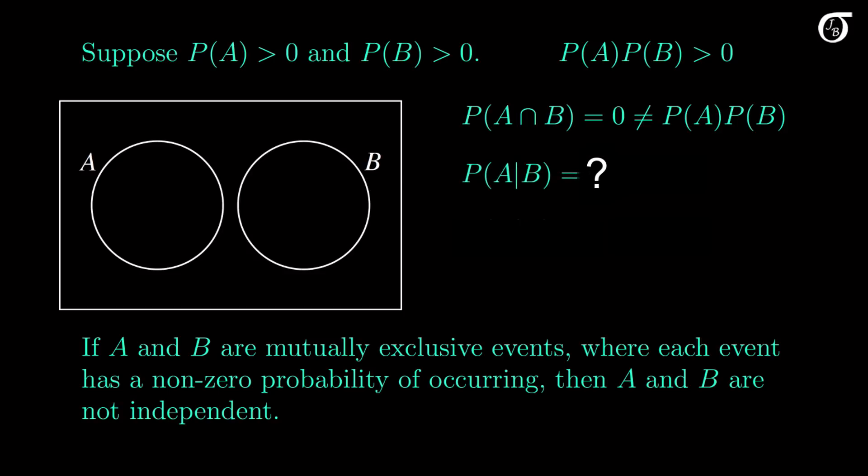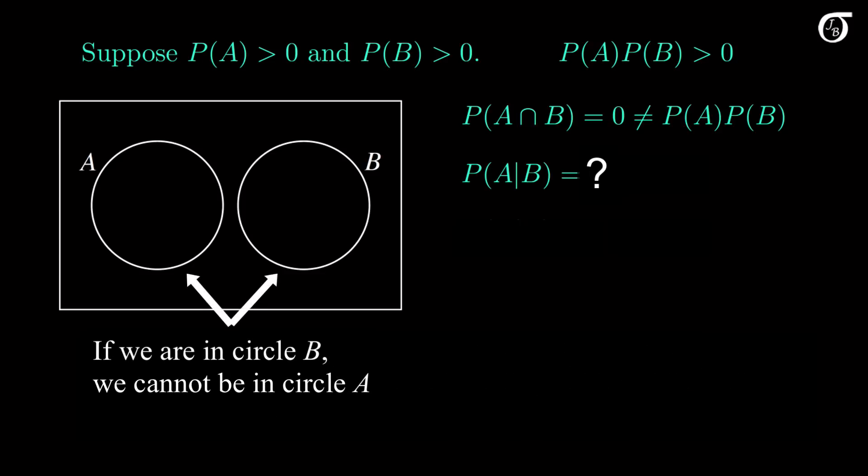Here, if B happens, what is the probability of A? Well if we're in circle B, we cannot be in circle A, so the probability of A given B, P(A|B), is 0. You can verify that with the conditional probability formula if you wish.